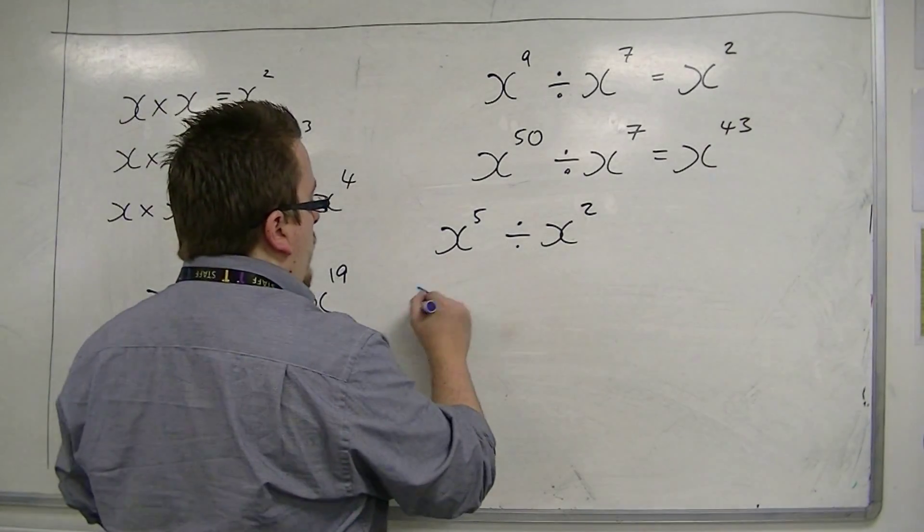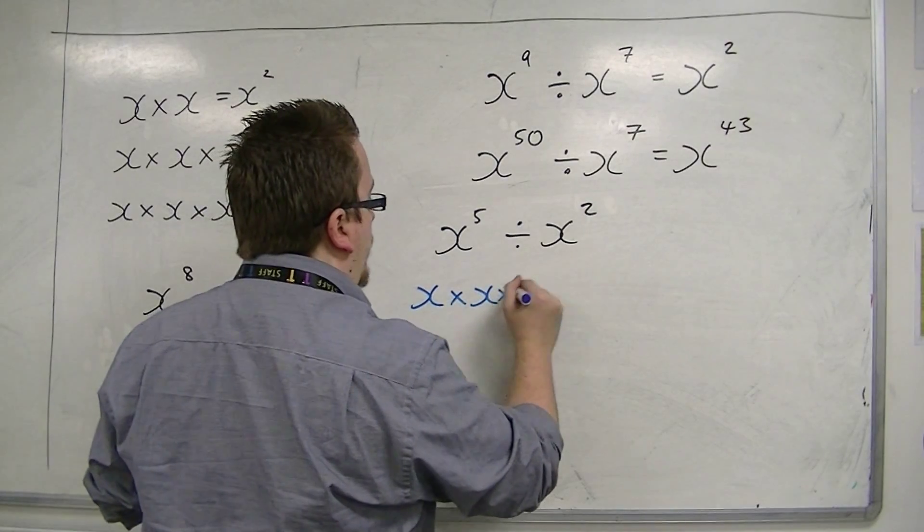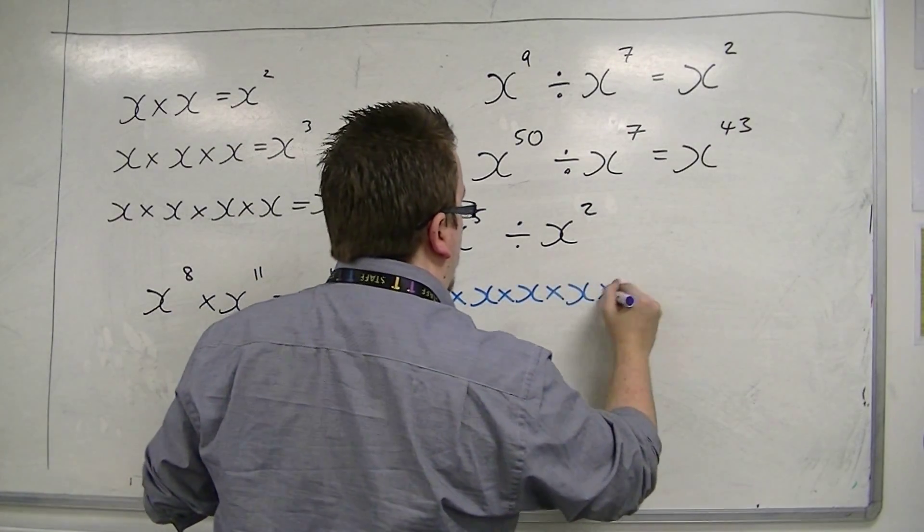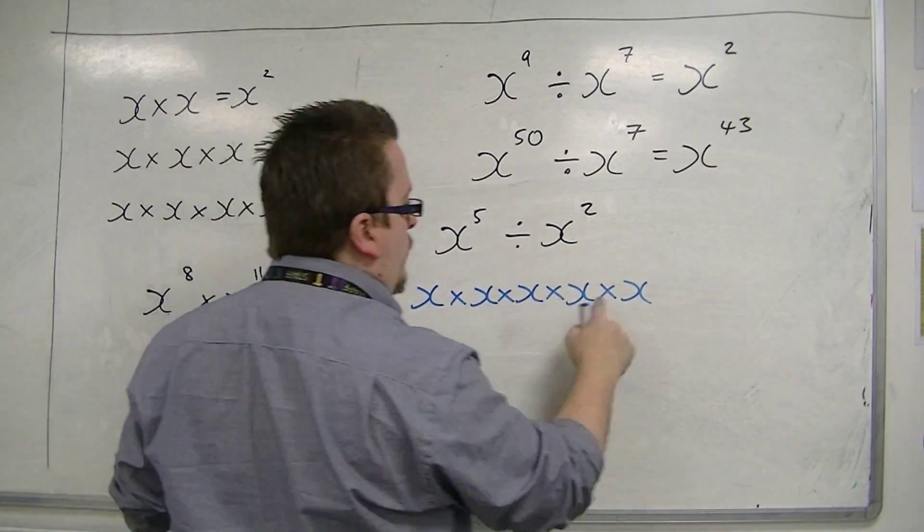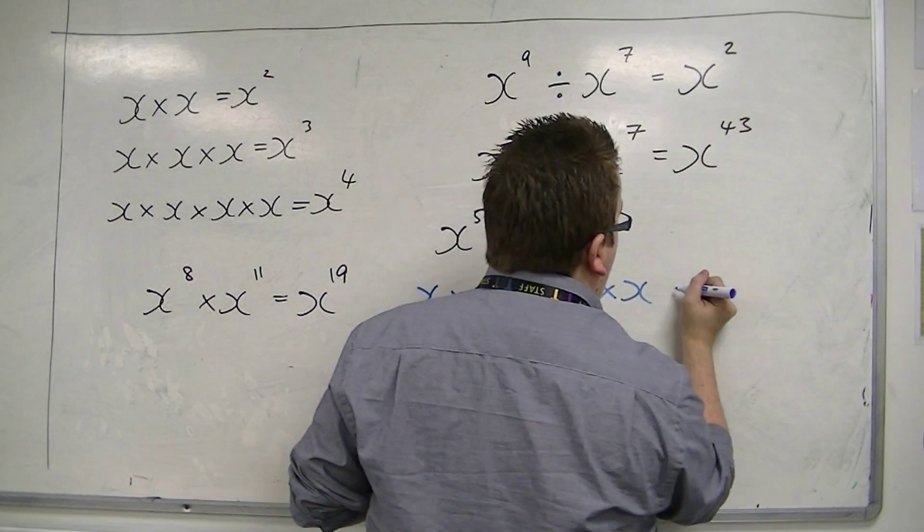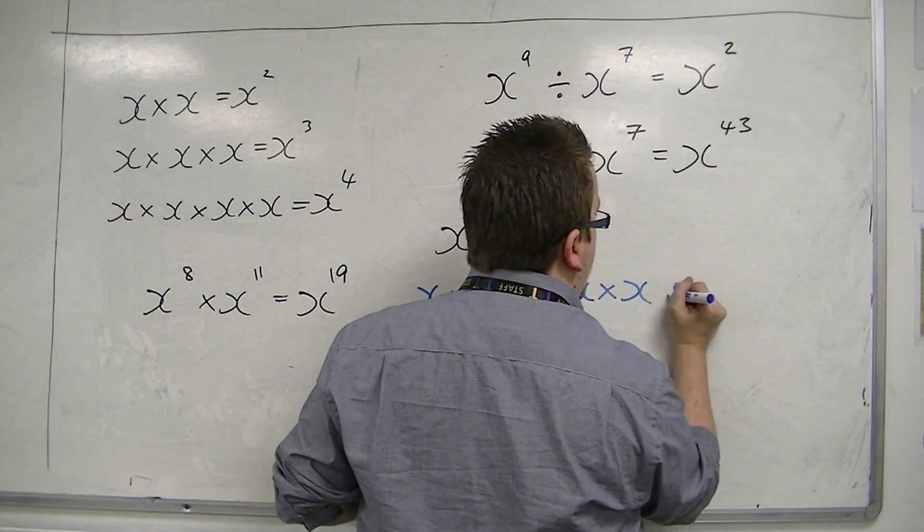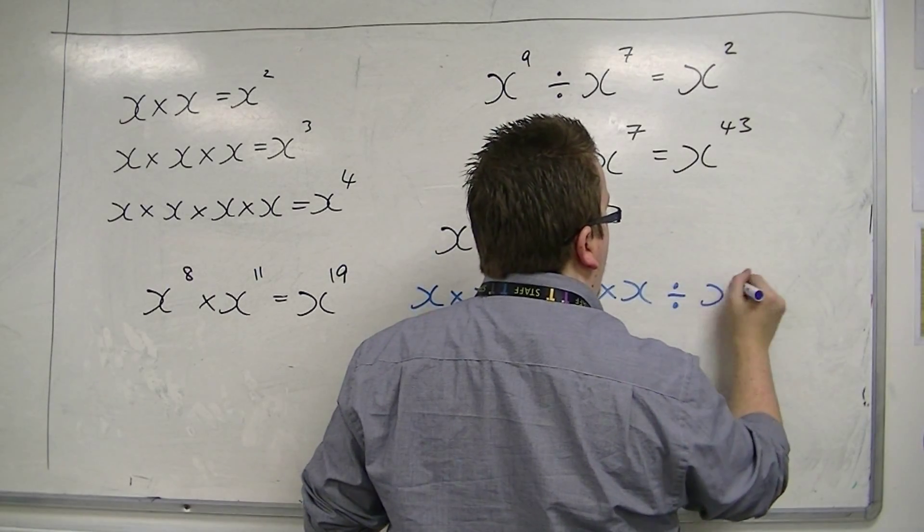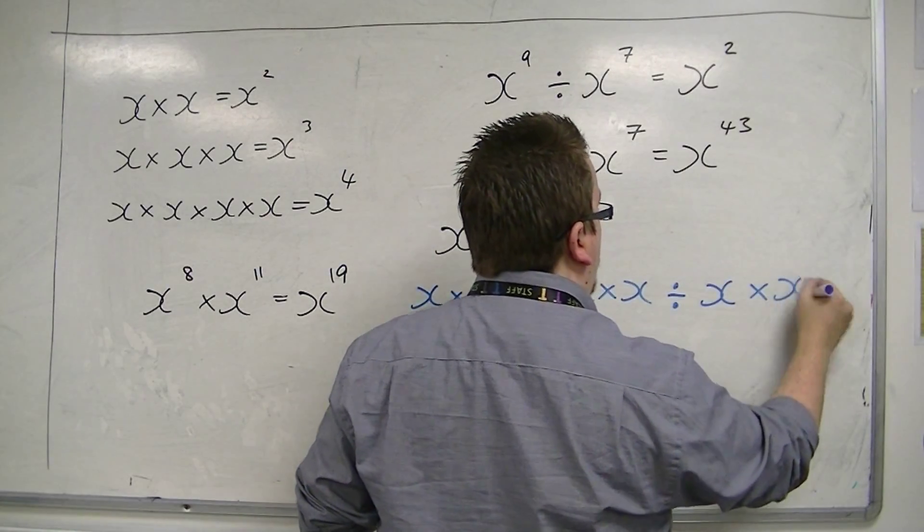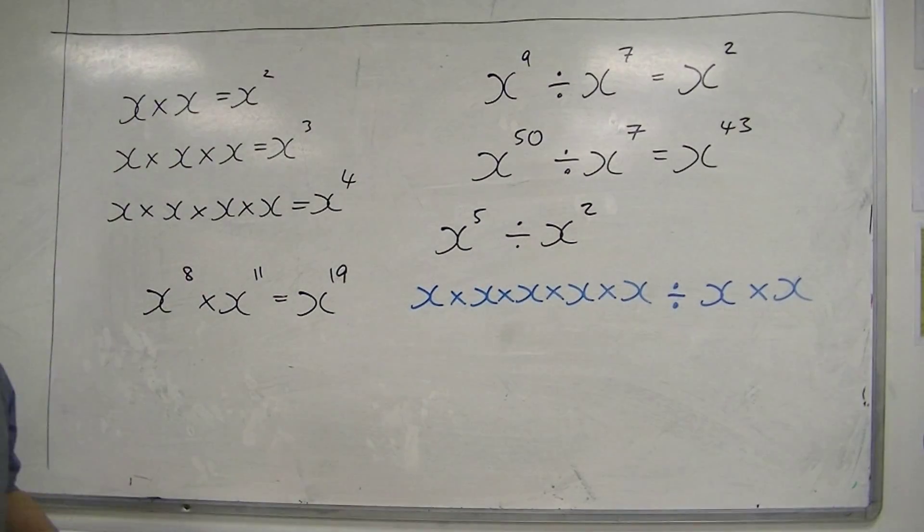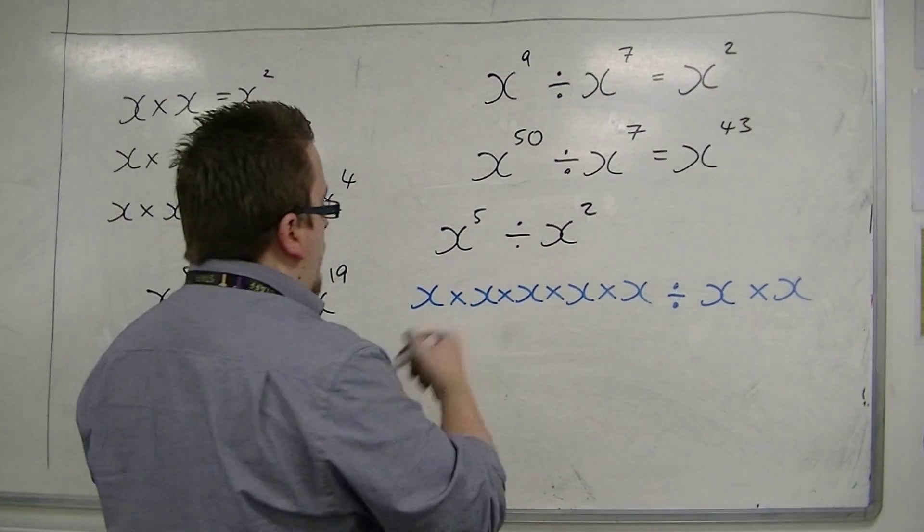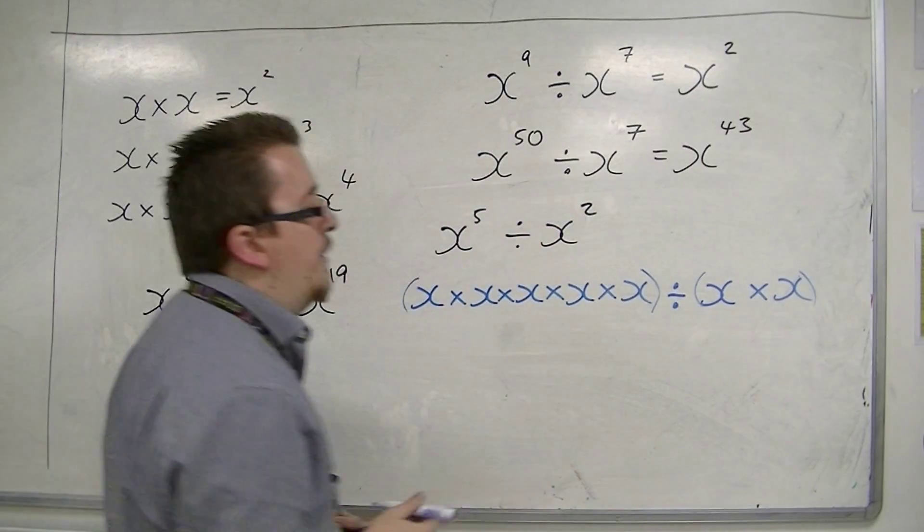Then I've got 5 x's multiplied together. So I've got 1, 2, 3, 4, 5, and then I'm dividing by x to the 2. So dividing by x times x. Now, these are two separate entities that I'm dividing.